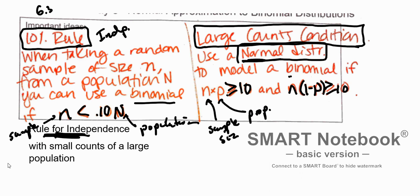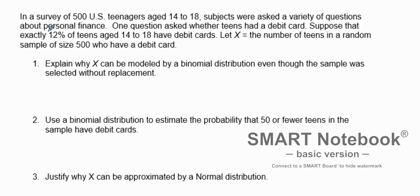Here's an example. A survey of 500 US teenagers ages 14 to 18 were asked a variety of questions about personal finance. One question asked whether teens had a debit card. Suppose that exactly 12% of teens ages 14 to 18 have debit cards. Let X be the number of teens in a random sample of size 500 who have a debit card. Explain why X can be modeled by a binomial distribution even though the sample was selected without replacement.